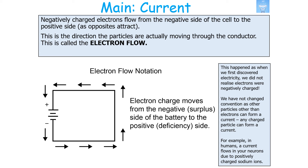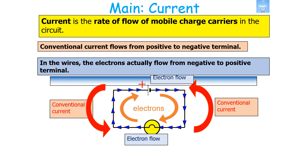This convention arose because when we first discovered electricity, we did not realise that electrons were negatively charged. Since that point we've not changed convention, as particles other than electrons can form a current — any charged particle can form a current. For example, in humans, a current flows in your neurons due to positively charged sodium ions. To clarify: current is the rate of flow of mobile charge carriers in the circuit. Conventional current flows from positive to negative, and in the wires, the electrons actually flow from negative to positive.